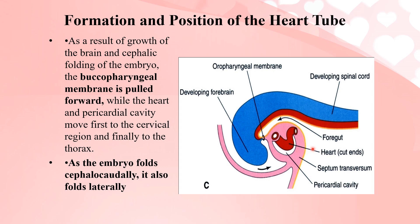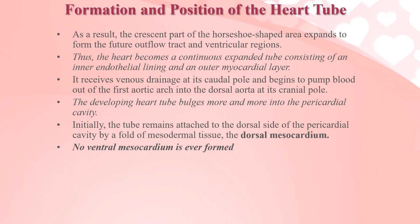As a result of brain growth and cephalic folding, the buccopharyngeal membrane is pulled forward and the heart and pericardial cavity first move to the cervical and then to the thoracic cavity. The crescent part of the horseshoe area expands to form the future outflow and ventricular region. The heart becomes a continuous expanded tube with an inner endothelial lining and outer myocardial layer, receiving venous drainage at its caudal pole and pumping blood out through the first aortic arch into the dorsal aorta at its cranial pole.